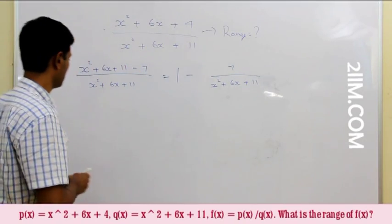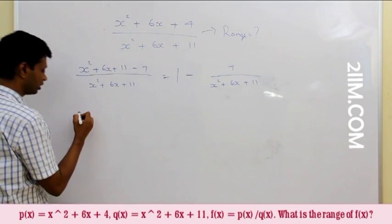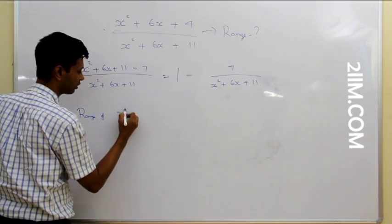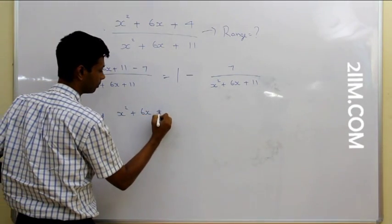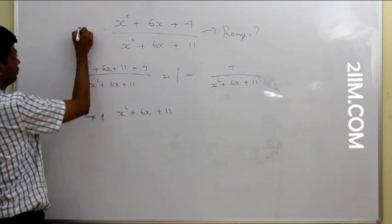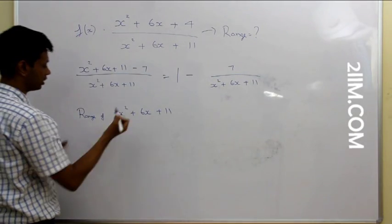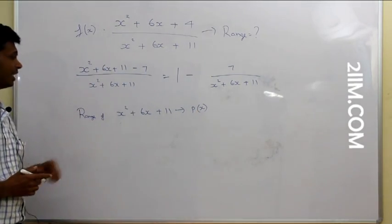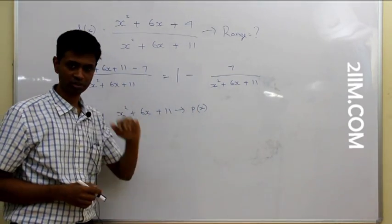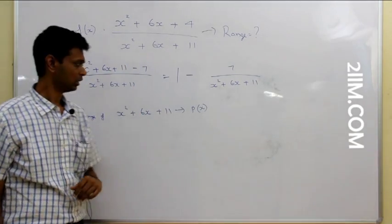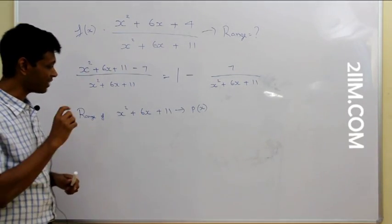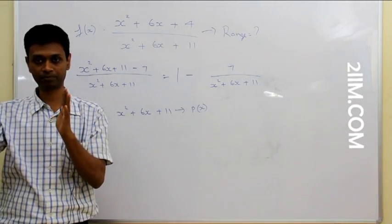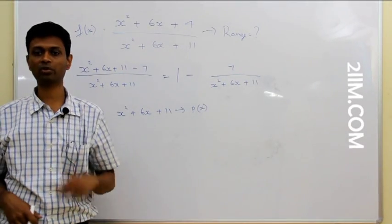I'm going to simplify this question step by step. Forget about the full function for now — I'm going to find the range of x² + 6x + 11 first. Call this p(x). Think about this: any square ranges from 0 to infinity. So x² goes from 0 to infinity, x² + 5 goes from 5 to infinity, and similarly (x−1)² + 5 also goes from 5 to infinity. If you can isolate a perfect square, that simplifies things.